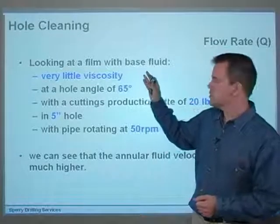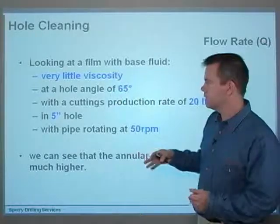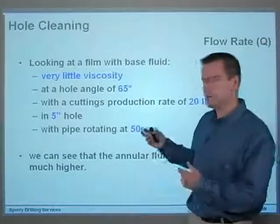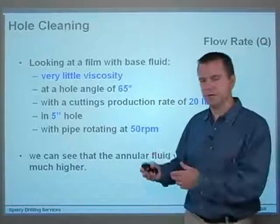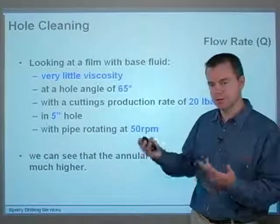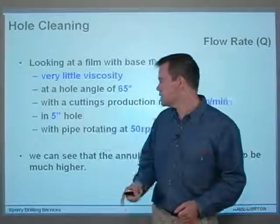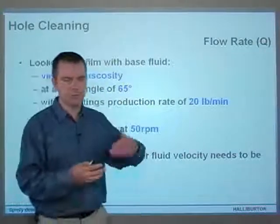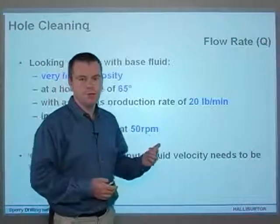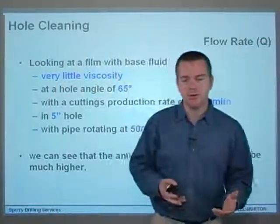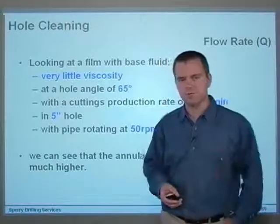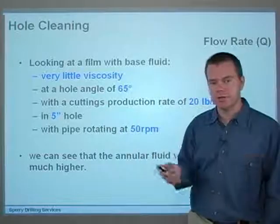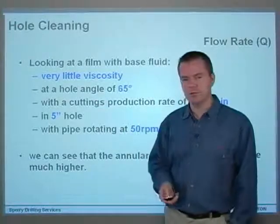One consequence of using a base fluid is that it has very little viscosity and therefore not a lot of carrying capacity. So the critical velocities we need to achieve in the annulus will be much higher than they would be for most muds. But regardless, the principles are the same. The hole angle is 65 degrees, with a cuttings production rate of 20 pounds per minute injected at the bottom, in a five-inch hole with pipe rotating at 50 RPM.